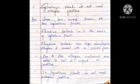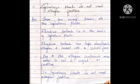The second one is — leguminous plants do not need nitrogen fertilizers. The answer is: gram, peas, mung beans, etc. are leguminous plants. Rhizobium bacteria live in the roots of leguminous plants. Rhizobium bacteria can take atmospheric nitrogen and convert it into a soluble form. Due to this, nitrogen compounds are added to the soil and are useful as fertilizers, so leguminous plants do not need nitrogen fertilizers.